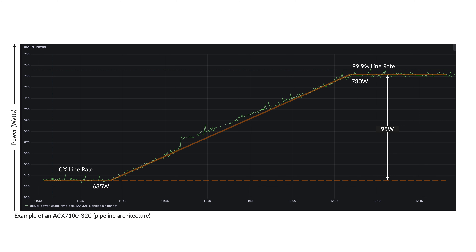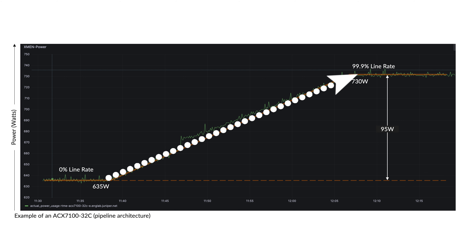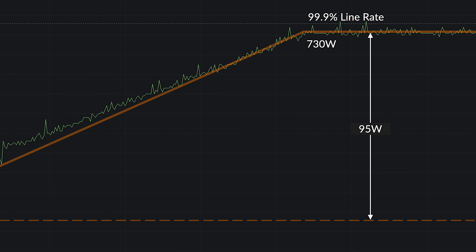Traffic is a factor of PFE power usage. With the SCX7100 example, we can say the traffic impact is almost linear: from no traffic to line rate on all ports, we see a progression that represents 95 watts in total. But is this dependent on bandwidth, or could it be driven by a different factor — like the number of packets per second?